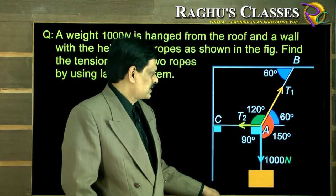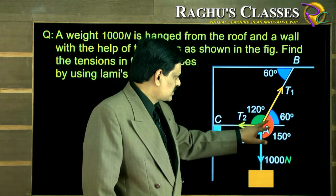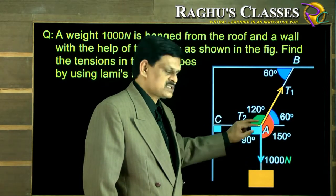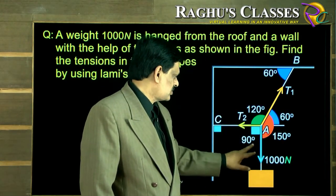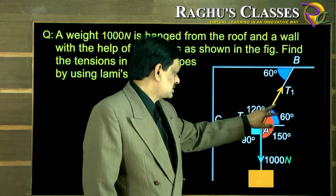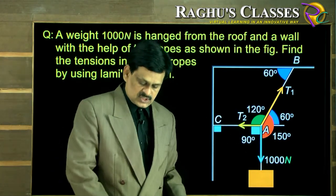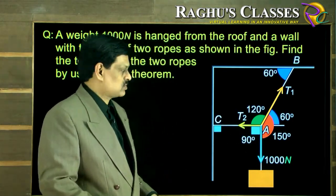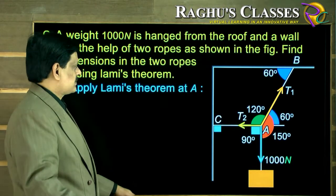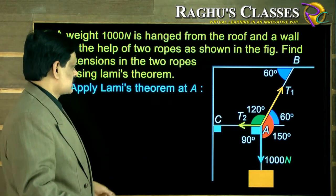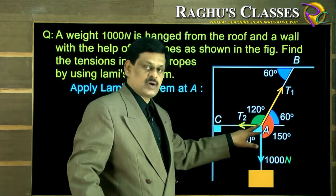So what we did there? We noticed the angles between every set of forces: the angle between T1 and T2 is known, the angle between T2 and W is known, and the angle between T1 and W is known. So if all angles are known and one force is known, the other two unknown forces can be calculated using Lambert's theorem, applying it at point A.